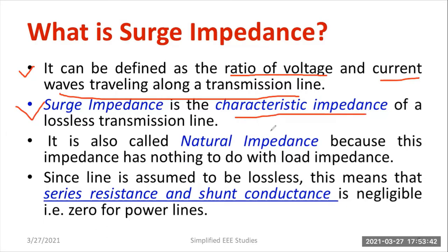Whenever you are considering surge impedance, you will be considering the transmission line as a lossless transmission line — that point you have to keep in mind. Moreover, surge impedance is also known as natural impedance. Why? Because this impedance has nothing to do with the load impedance, and that is why it is also known as natural impedance.